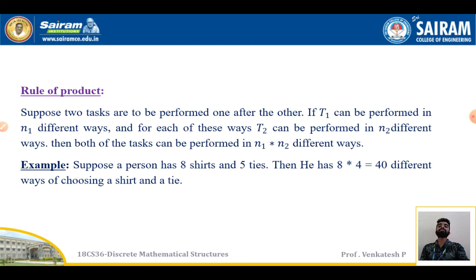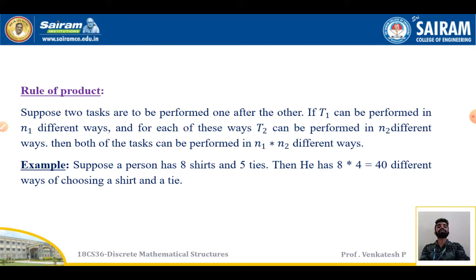This is the Rule of Product. Suppose two tasks are performed one after the other. If T1 can be performed in n1 different ways, and for each of these ways T2 can be performed in n2 different ways, then the two tasks together can be performed in n1 times n2 ways.